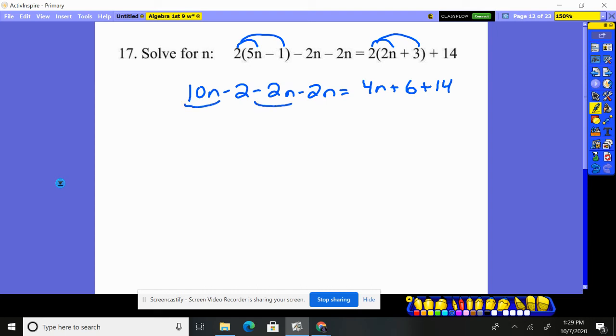I now put together common things. 10n minus 2n is 8n, minus 2 more n is 6n. Take away the number 2, equals over here, I have 4n plus 20.